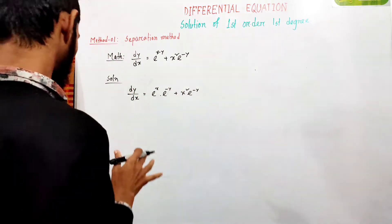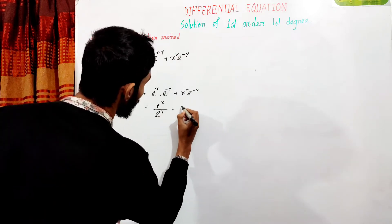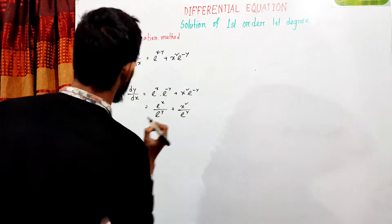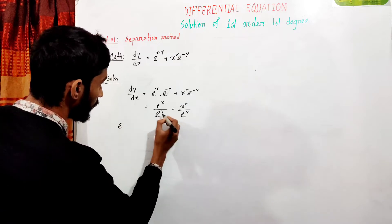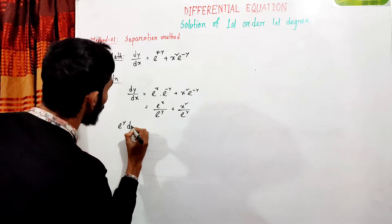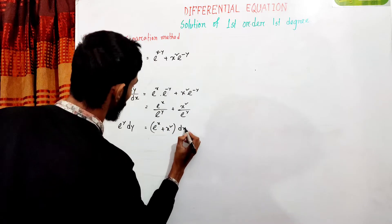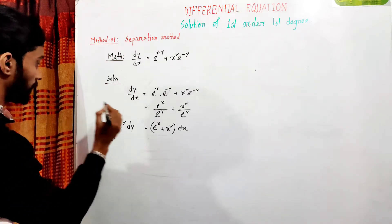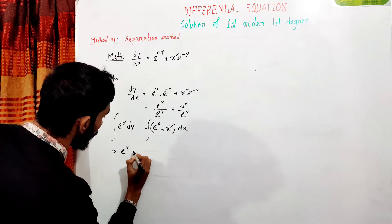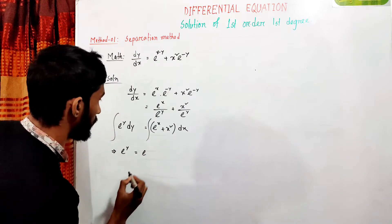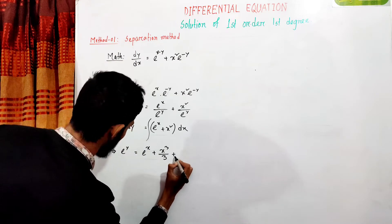This will be separated. We apply the separation method: e to the power y plus x squared e to the power y. Taking the same process and integrating, we get e to the power y equal to e to the power x plus x cubed over 3 plus C.